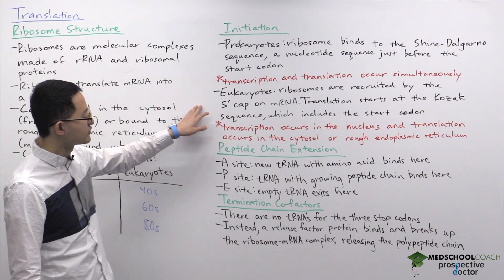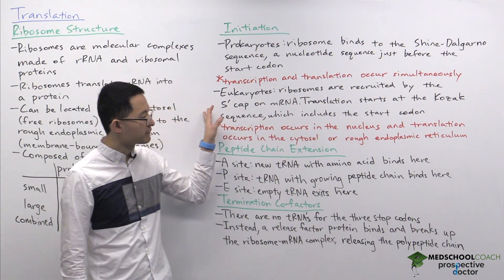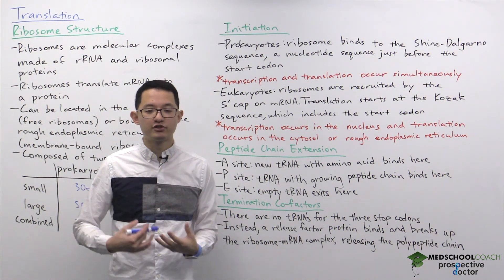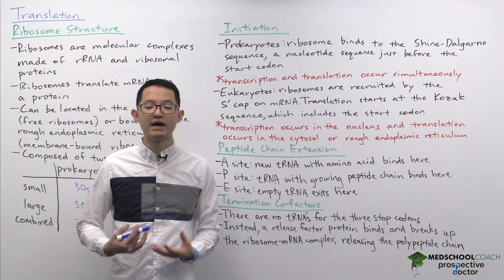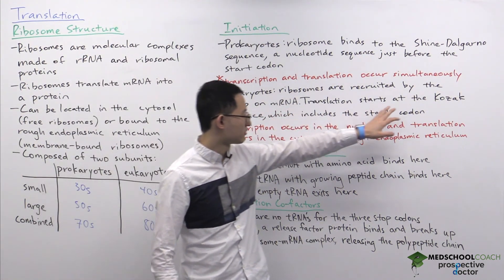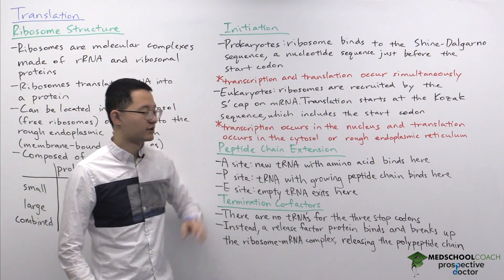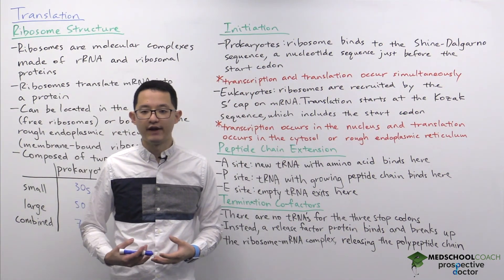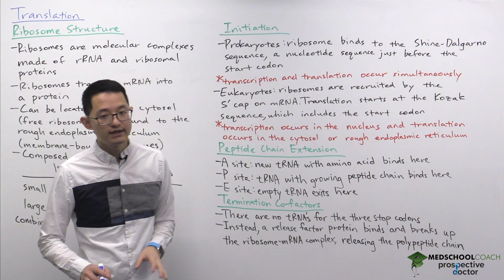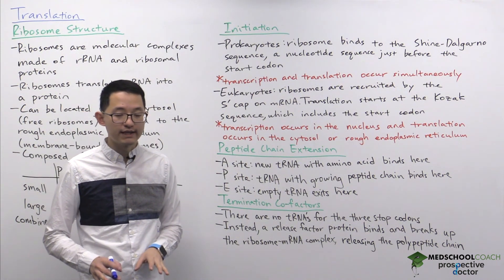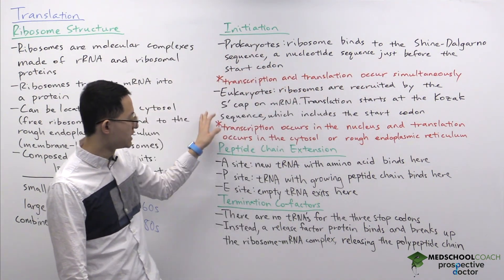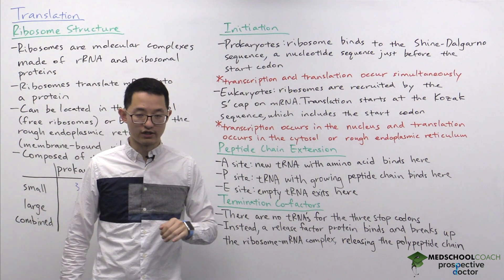In eukaryotes, ribosomes are recruited by the 5' cap on mRNA, which is one of the post-transcriptional modifications that converts pre-mRNA into the mature form. Translation starts at what is called the Kozak sequence, a conserved sequence found in eukaryotic mRNA that includes the start codon. Make sure you can relate these terms to their organisms: the Shine-Dalgarno sequence for prokaryotes and the Kozak sequence for eukaryotes.